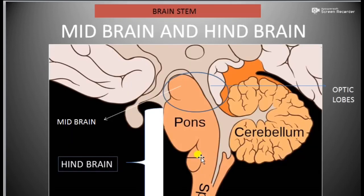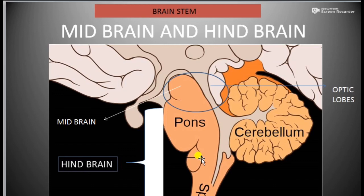The medulla oblongata is conical in shape; the broad side connects with the pons and the narrower end merges with the spinal cord. It is very crucial because it contains all the centers of vital functions such as respiration, heartbeat, swallowing, vomiting, sneezing, and coughing. All involuntary functions like digestion are under the control of the medulla oblongata, while voluntary and motor functions are related to the cerebellum.